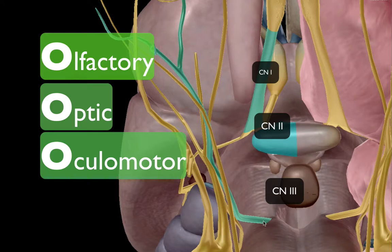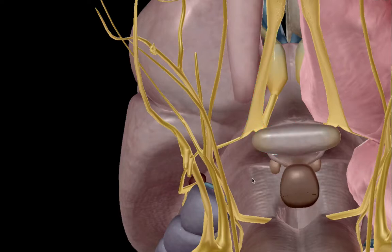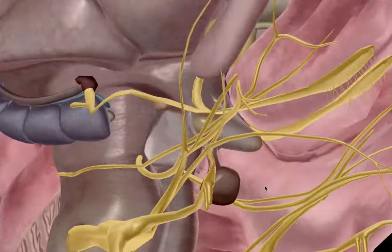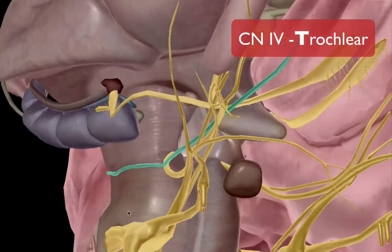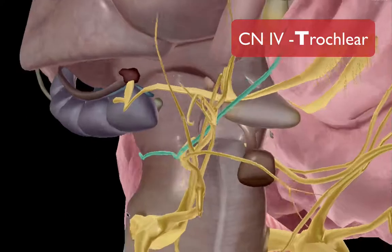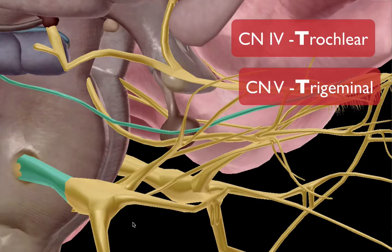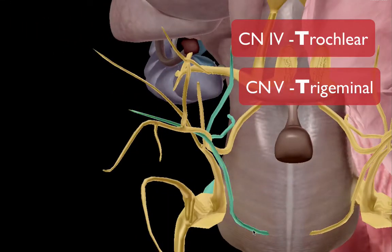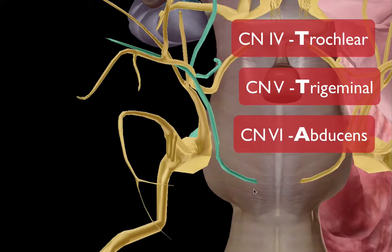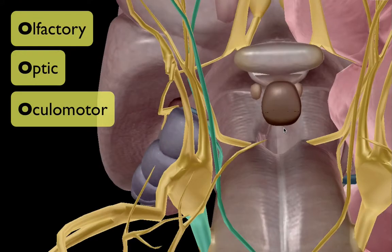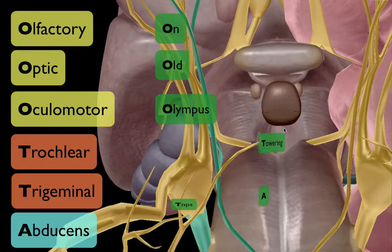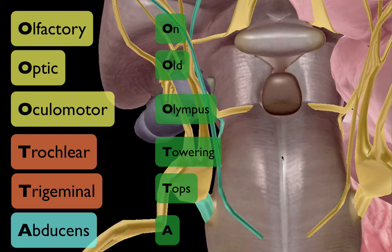Now let's look at the next three. The first two begin with T. Here is your trochlear nerve, and then the largest of all is the trigeminal. The sixth one, more inferior and medial on the pons near the midline, is your abducens. So altogether: olfactory, optic, oculomotor, trochlear, trigeminal, and abducens.